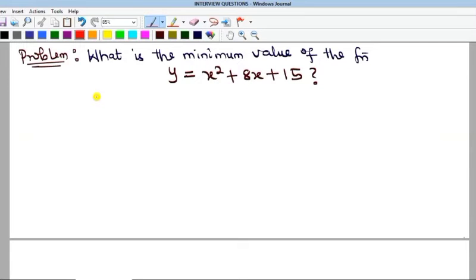This problem asks us to find the minimum value of the function. Now recall that if I have a Cartesian graph like this, and a function goes this way, the minimum value is the value of y at this point.